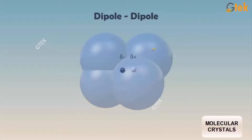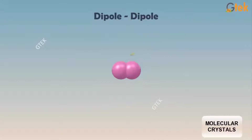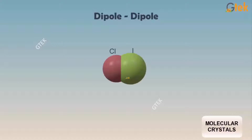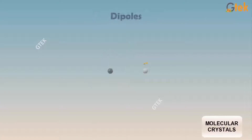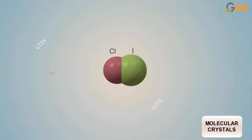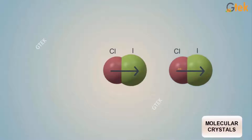Taking the dipole-dipole van der Waals force: you have sigma plus and sigma minus, which merge to form a dipole-dipole interaction. A typical example is chlorine and iodine merging to form a dipole-dipole interaction between them. You are able to see the dipoles having an attraction — the opposite charges attract each other.